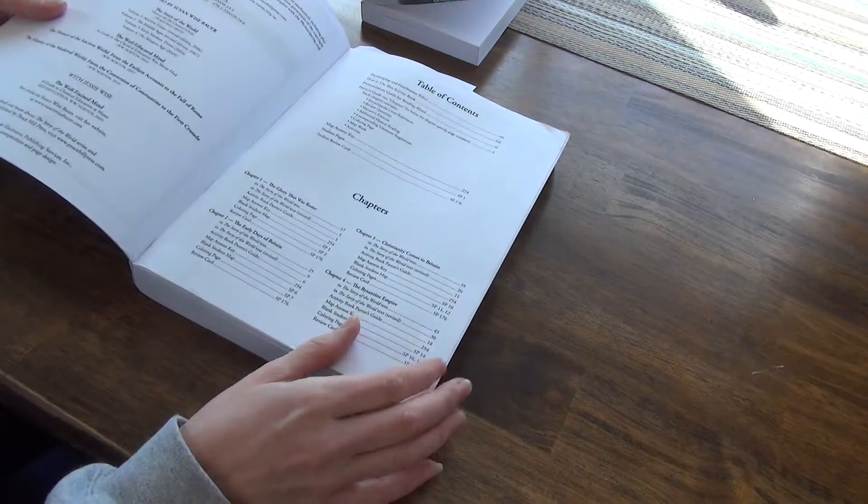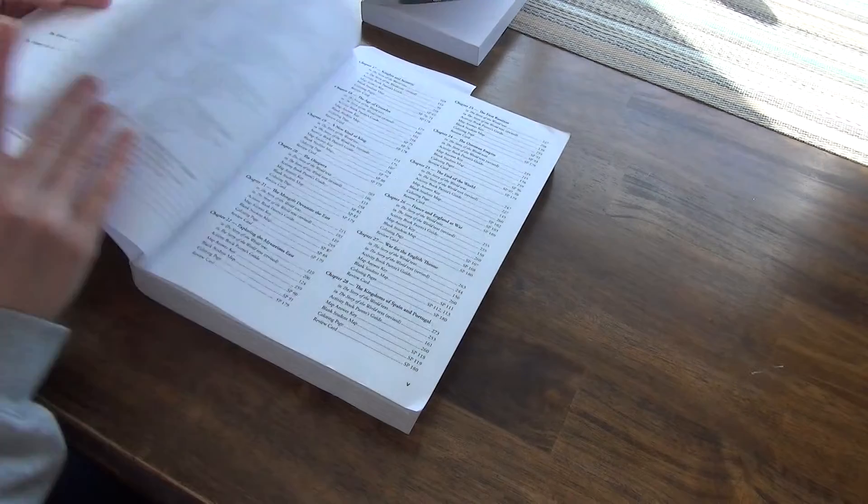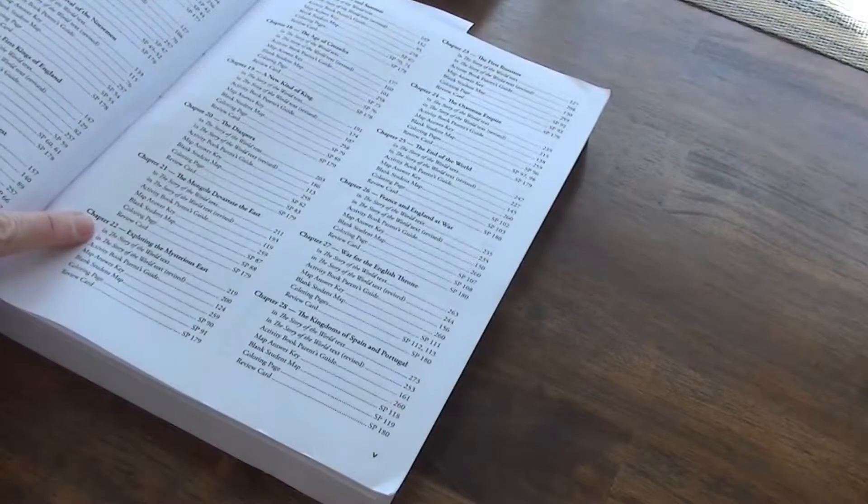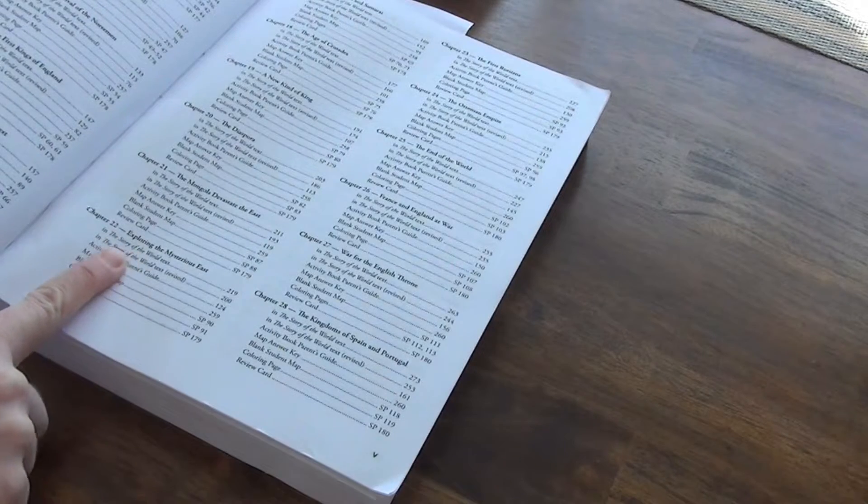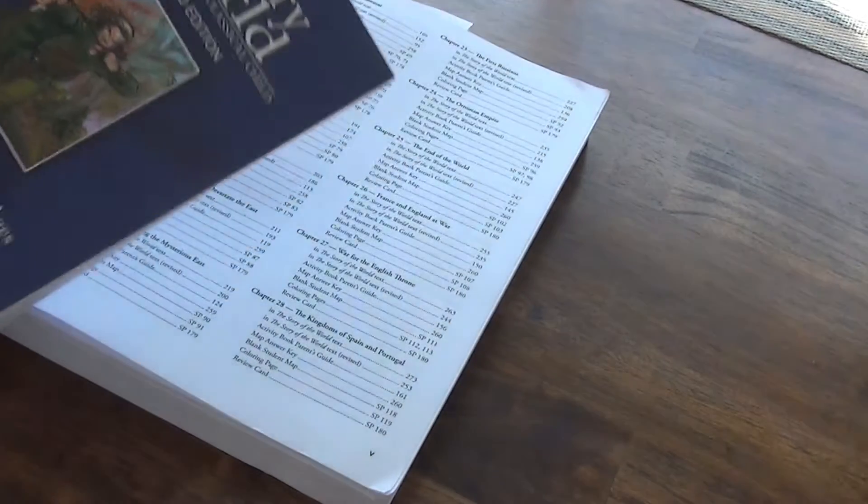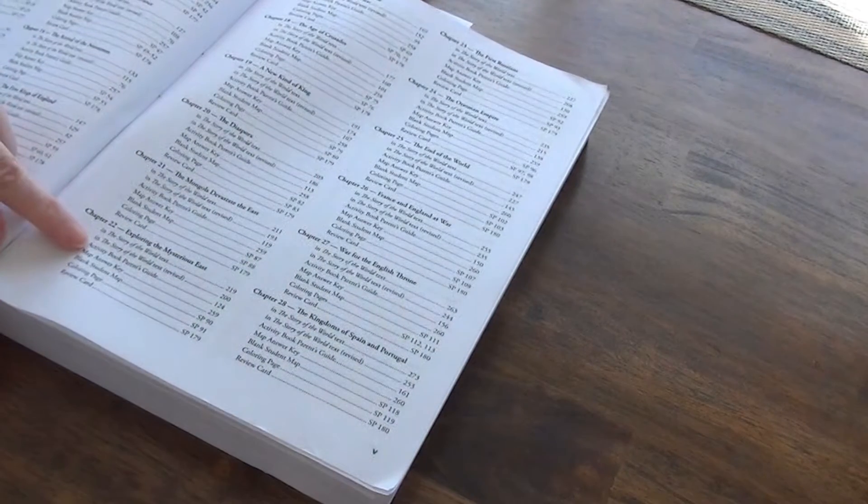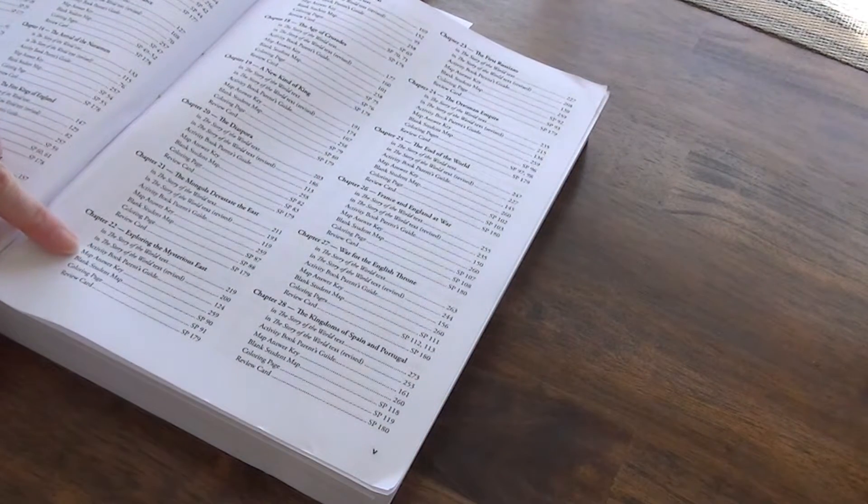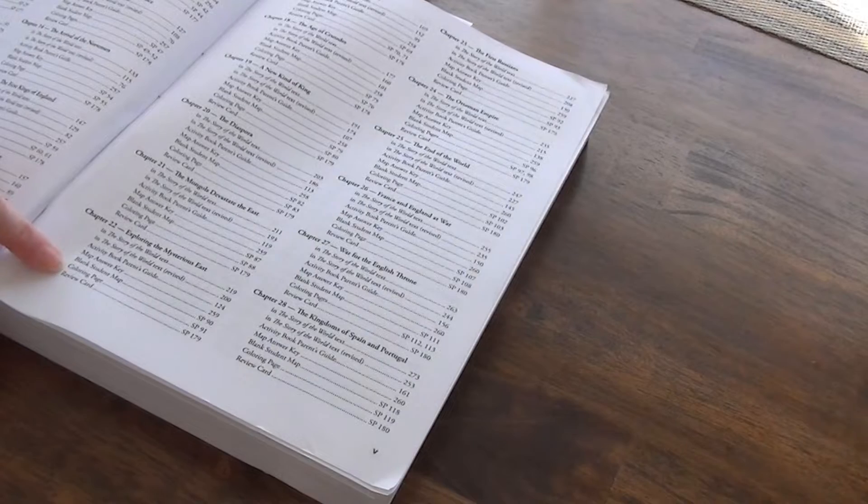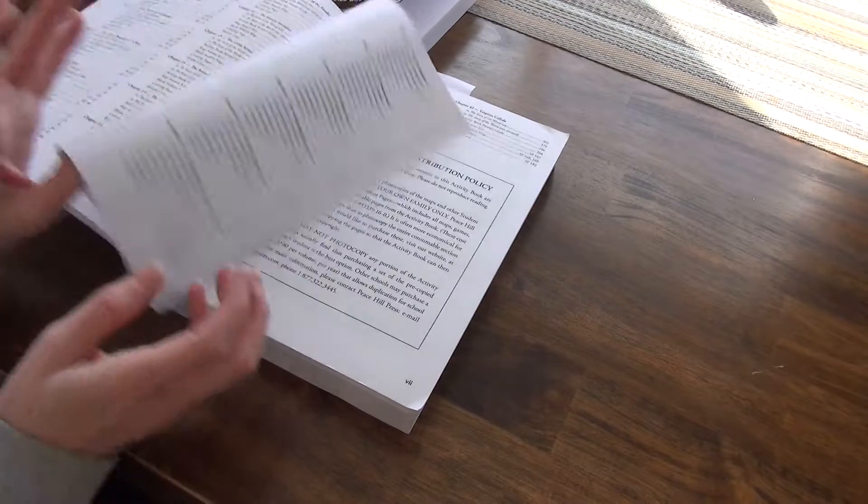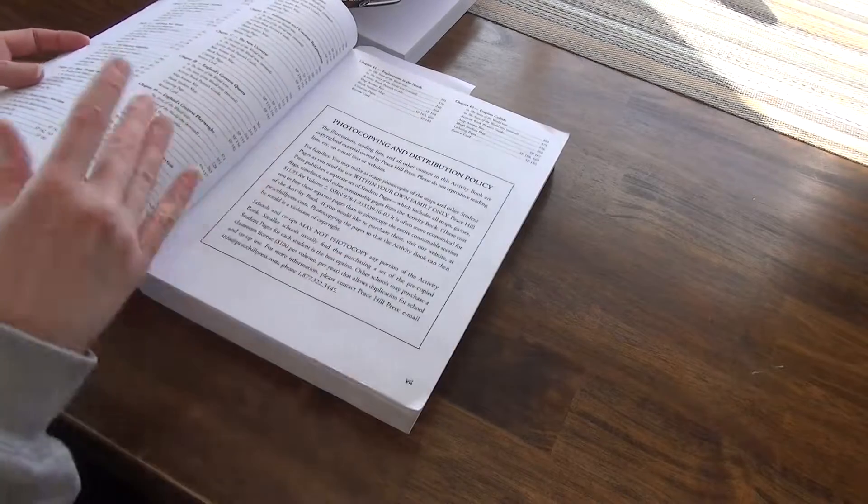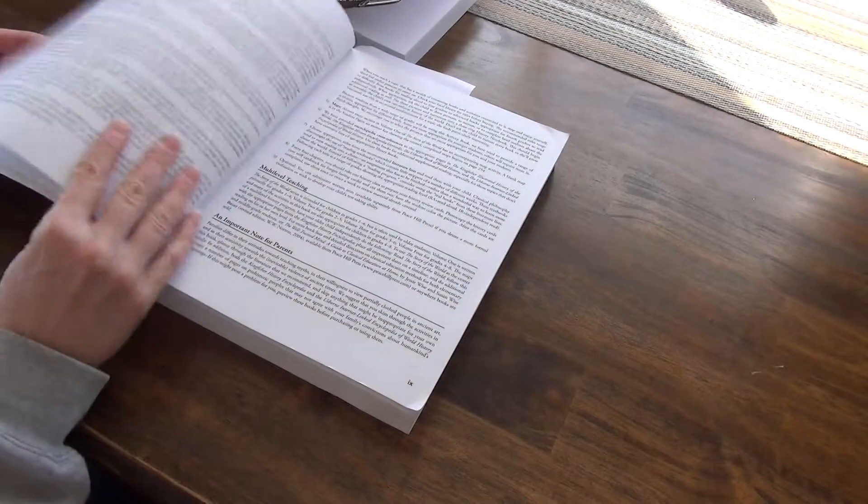So here at the front, we have our table of contents with all of the chapters. Each chapter is broken into the Story of the World original text, the Story of the World revised text, the activity book, parent's guide, the map, answer key, blank student map, coloring card, and review coloring page and review card. Of course, you're able to copy this for your own home use.